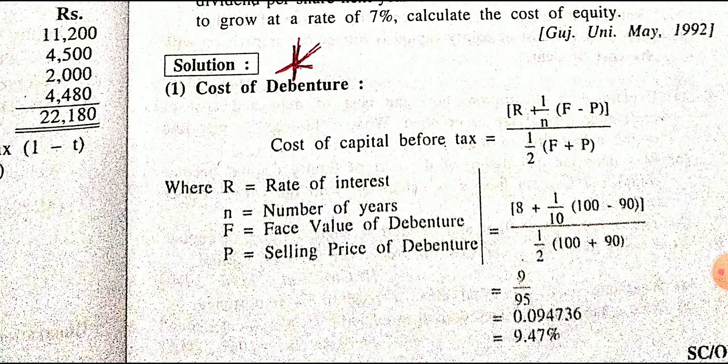Company issued 10% preference shares without a maturity date — meaning no number of years is given, making it an irredeemable preference share. Issue price is 95 (flotation cost deducted from 100), so F equals 100 and net proceed P equals 95. For irredeemable preference share, the formula is D upon P: dividend per share is 10, net proceed is 95.